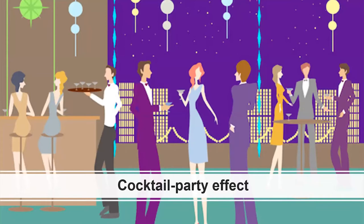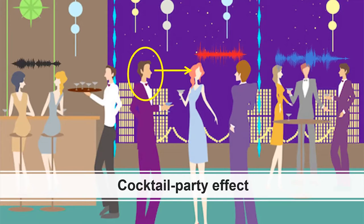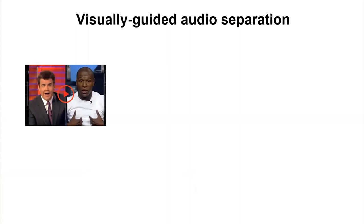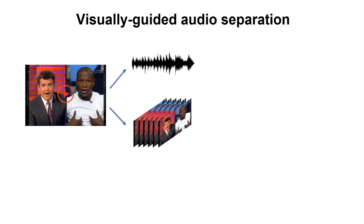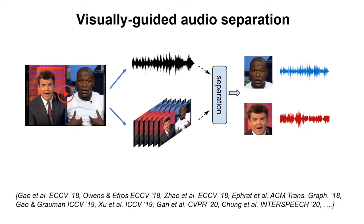Think about the AR headset of the future worn in a crowded environment where many sounds and speakers are present. This is the well-known cocktail party problem that humans can do to some degree. We'd like our machines to do it too — to enhance speech and make listening easier, or help someone with an impairment. So how do we separate the speech of the listener we care about? For many years this was tackled from the audio stream alone, but vision can give us extra information to do it even better.